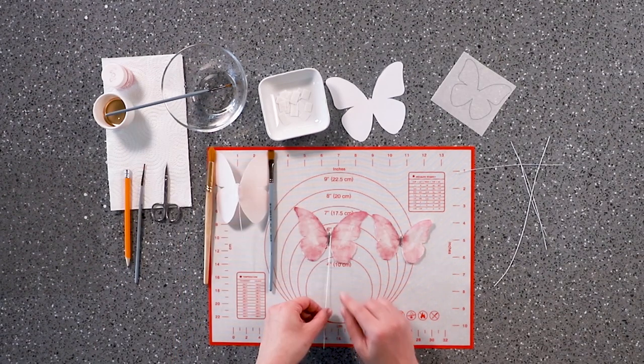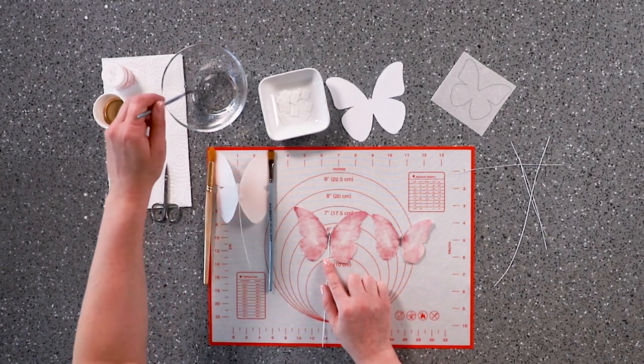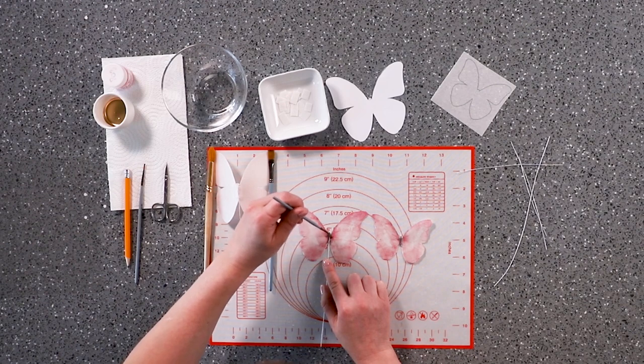You can also make double butterflies. Just glue them together with vodka.